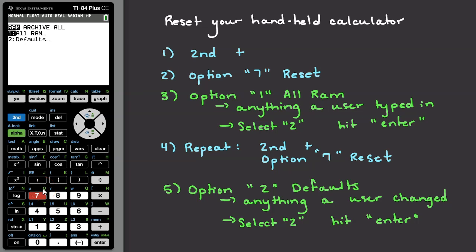There are actually two settings that we are going to want to reset. The first one is all RAM. Select option number 1 by pressing 1 on your calculator.